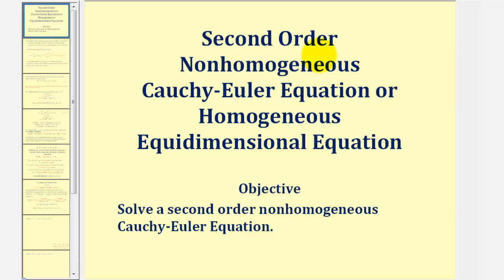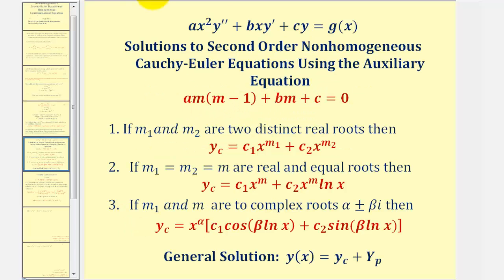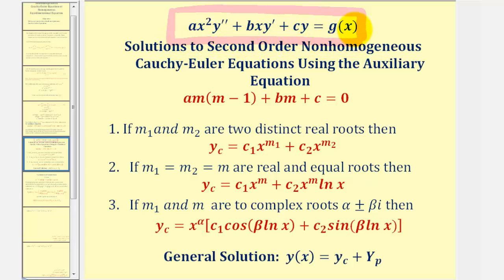Welcome to an example on how to solve a second-order, non-homogeneous Cauchy-Euler equation. A second-order, non-homogeneous Cauchy-Euler equation must fit this form here, where we recognize it as a second-order differential equation that is non-homogeneous as long as g of x is not equal to zero. What makes this a Cauchy-Euler equation is that for every term on the left side, the degree of the coefficient is equal to the order of the derivative.